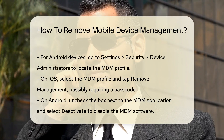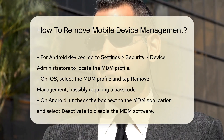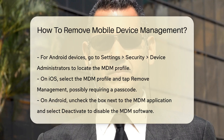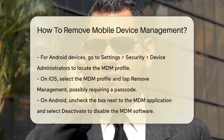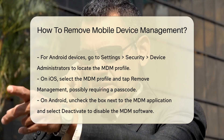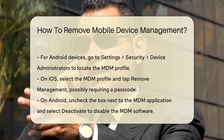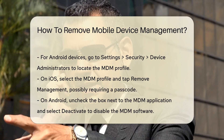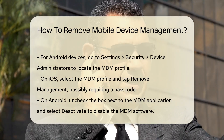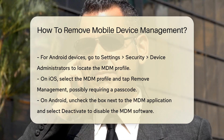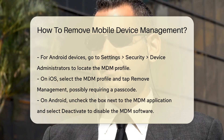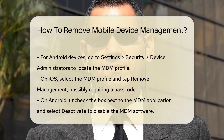After locating the MDM profile, you will need to remove it. On iOS, select the MDM profile and tap Remove Management. You might be prompted to enter a passcode. For Android devices, uncheck the box next to the MDM application, then select Deactivate. This will disable the MDM software on your device.